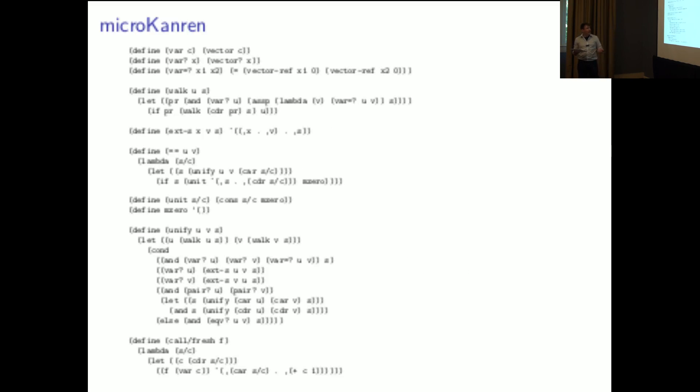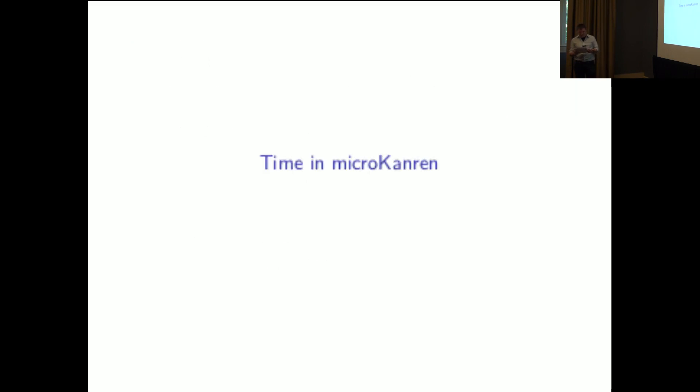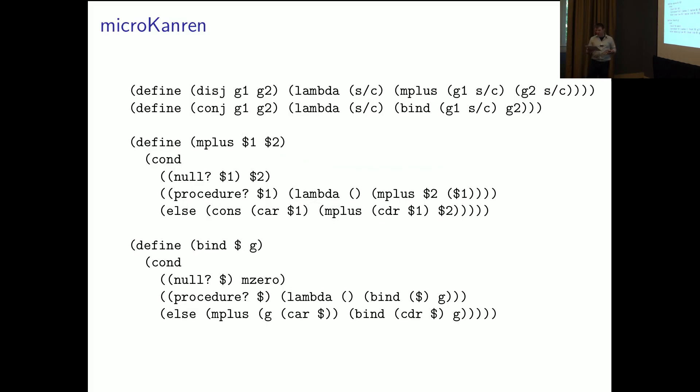He wanted to point out that the full implementation fits on two slides and I'll note that this one even went to a higher font size. So the interleaving itself is a guaranteed complete search and doesn't have the same, typically the same performance penalty that we get from breadth first search. And it shows up in the second case of M plus by flipping these two, the flipping of those two streams in that area.